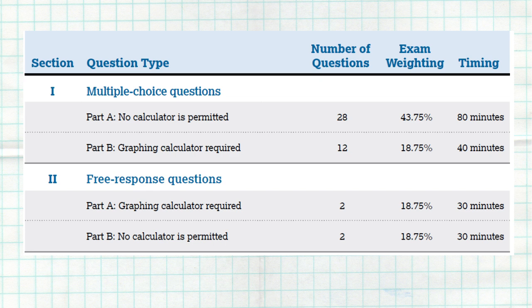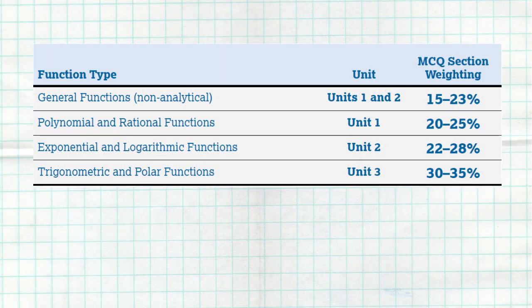In the multiple choice, there are 40 questions broken down into two parts: Part A has 28 questions without a calculator, and Part B has 12 questions with a calculator. The breakdown of all 40 questions is roughly: about 15–23% deal with general functions, 20–25% with polynomial and rational functions, 22–28% with exponential and logarithmic functions, and 30–35% with trigonometric and polar functions.